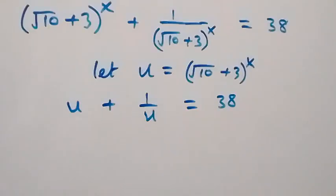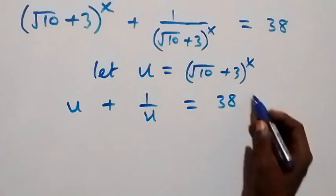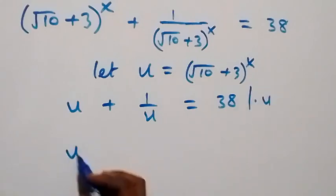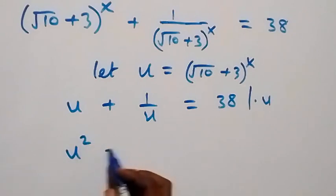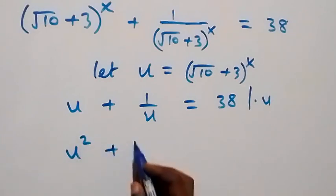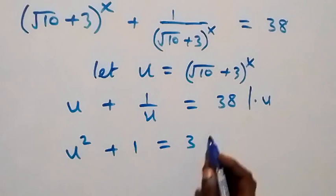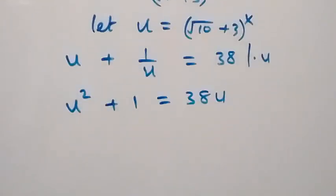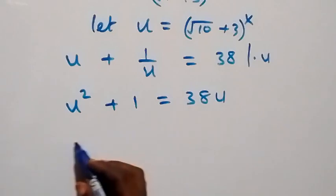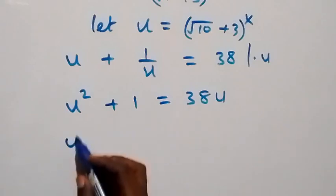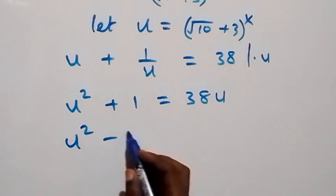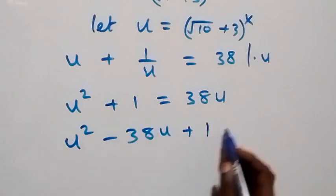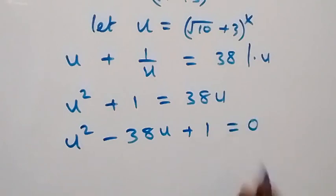Here we can multiply through by u to clear the fraction, and this gives us u squared plus 1 equals to 38u. Then bringing 38u to this side to form a quadratic equation gives us u squared minus 38u plus 1 equals to 0.